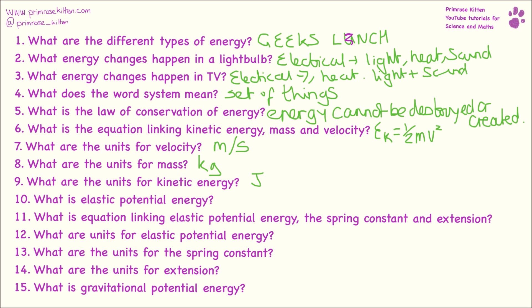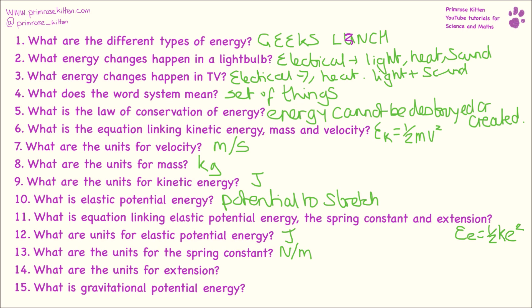What is elastic potential energy? This is stretching energy — energy that's stored in something like a hair band, elastic band, or a bungee cord. What is the equation linking elastic potential energy, the spring constant and extension? Elastic potential energy equals half times the spring constant times extension squared. What are the units for elastic potential energy? Joules. What are the units for the spring constant? Newtons per metre. What are the units for extension? Metres.